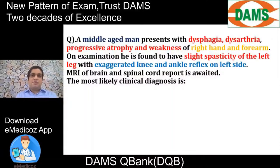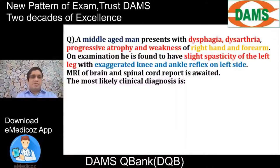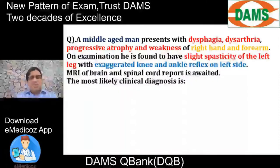Difficulty in swallowing and difficulty in articulation or speech reflects a problem in the lower cranial nerves originating from the brainstem, especially the 10th and 12th from the medulla. So there is a lesion in the lower brainstem medulla in this case.